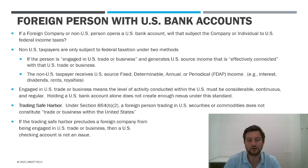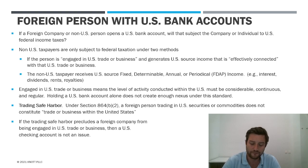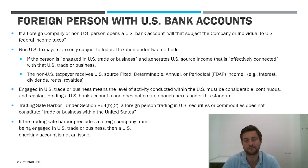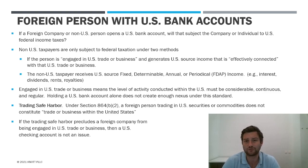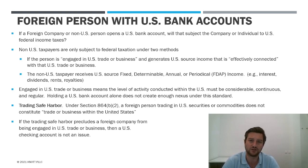The second way is if you're a non-U.S. person invested in U.S. assets that generate fixed, determinable, annual, or periodical income — or what the IRS refers to as FDAP income. This includes U.S. source interest income, dividends, rents, royalties. There are a number of other types of payments that would qualify, but these are the big ones we see in practice. Interest and dividends are by far number one, and royalties as well.